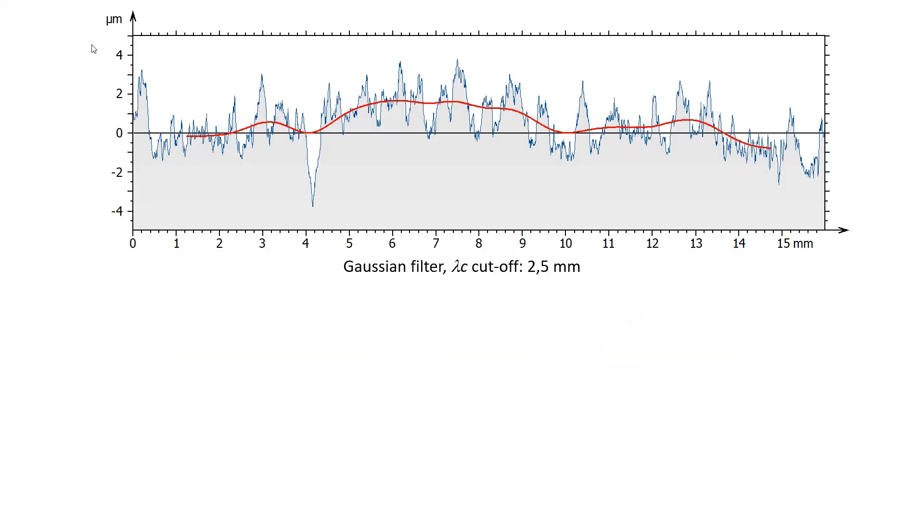In practice, parameters are usually calculated on a filtered profile. The filtration operation consists of calculating a profile that contains the longest wavelengths, longer than a defined cutoff value. Such a profile is called the waviness. It loosely follows the main long-term variations of the profile, without going into each irregularity.